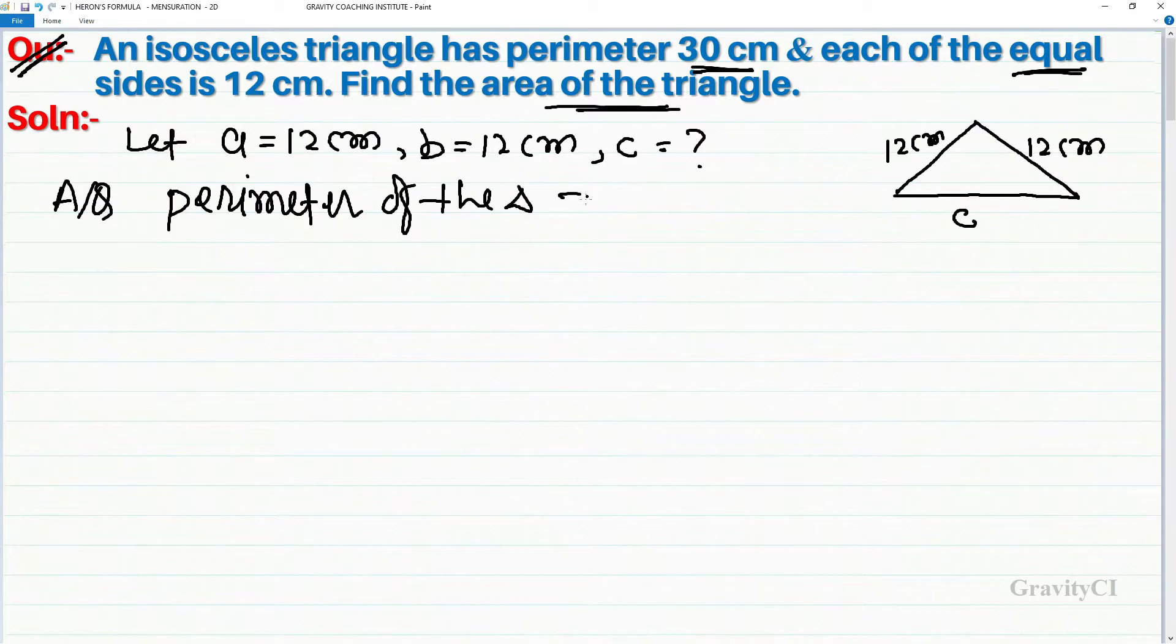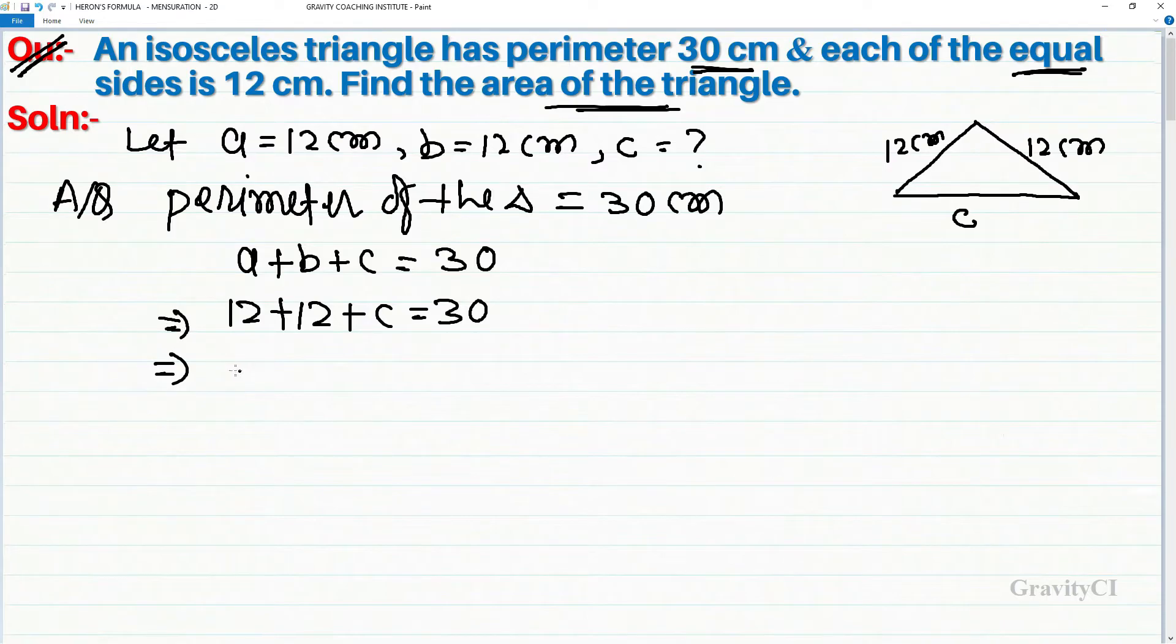Perimeter of the triangle equals 30 centimeter. The sum of sides, so a plus b plus c equal to 30. So 12 plus 12 plus c equal to 30, which implies that 24 plus c equals 30.